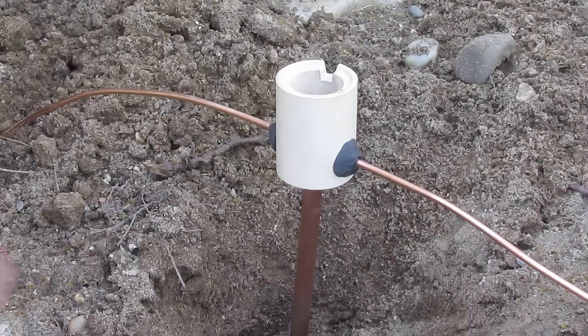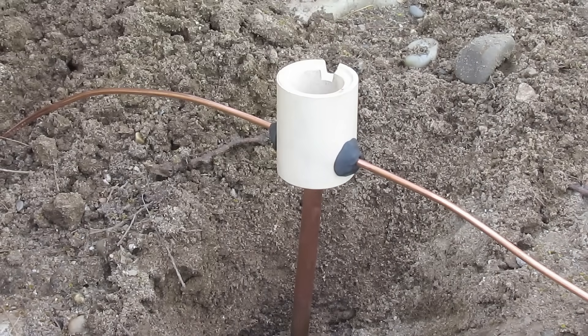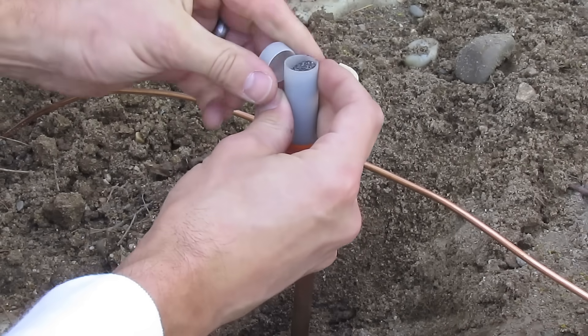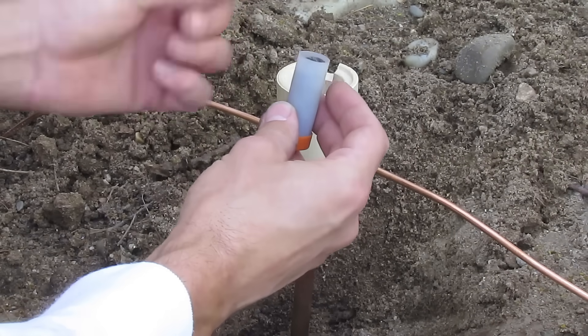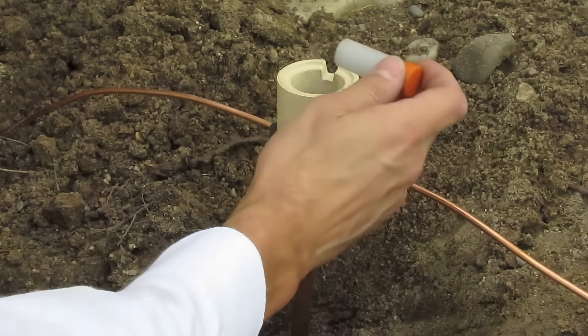Next step is to drop in the disc. Make sure that's seated in there nice and flat. And then pour in the weld powder. I'm going to put in the weld metal first, which is the coarser powder with the clear lid. Pour that in there.